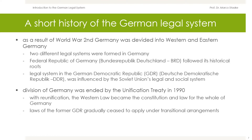The legal system in the Eastern part, the German Democratic Republic, GDR, or in German Deutsche Demokratische Republik, was influenced by the Soviet Union's legal and social system. The division of Germany was ended by the Unification Treaty in 1990. With the reunification, the Western law became the constitution and law for the whole of Germany. The laws of the former GDR gradually ceased to apply under transitional agreements.